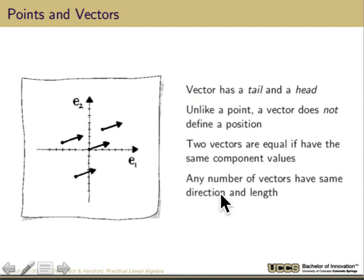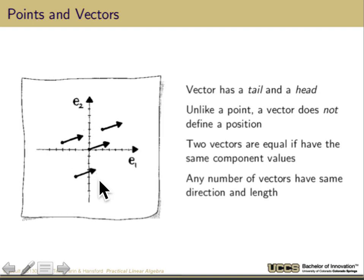Vectors have a head and a tail. Unlike a point, a vector doesn't actually define a position. All four of these vectors shown here are really the same vector — they have the same direction and length starting from their tail, and you can put the tail anywhere you want. Two vectors are equal if they have the same components. The components don't say where in space they will be; they just say add this much to the first component, add this much to the second.